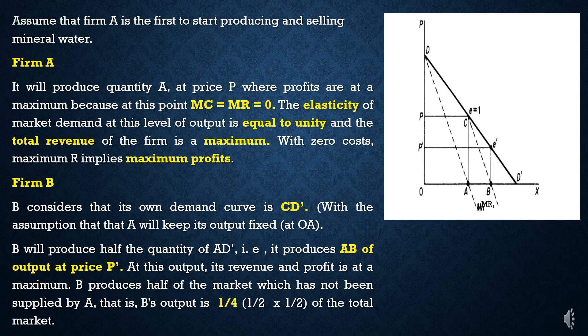Let us examine the model with the help of a diagram. This diagram shows the total market demand curve, which we will use to explain how each firm determines its output.